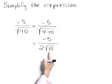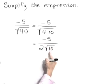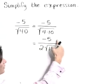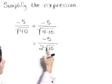Now let's rationalize. We want to get this radical out of the denominator. So I'm going to do this by multiplying both the top and the bottom by the square root of 10.